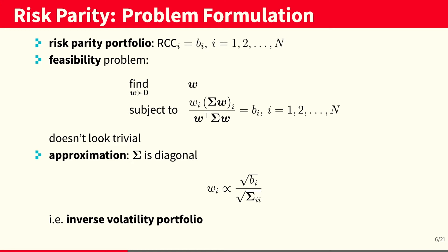So, at first, this problem doesn't look trivial. However, if we consider an approximated version where the covariance matrix is only diagonal, then there exists a closed-form solution. And it turns out that this closed-form solution is the so-called inverse volatility portfolio.